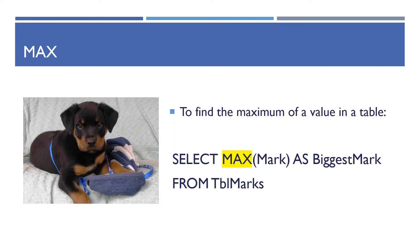MAX — to find the maximum value in a table you would write: SELECT MAX(mark) AS biggest_mark FROM marks. We put an alias using AS because otherwise the column heading comes up as EXPR001, so it's nice to give it a proper heading like 'biggest mark'.